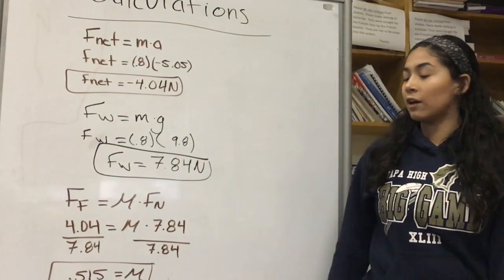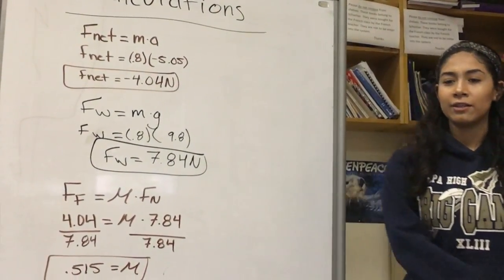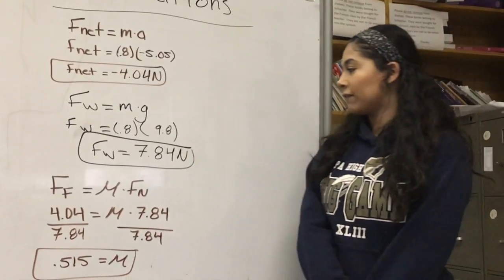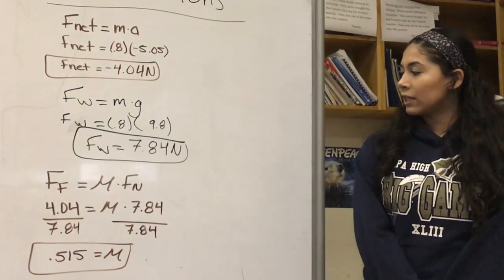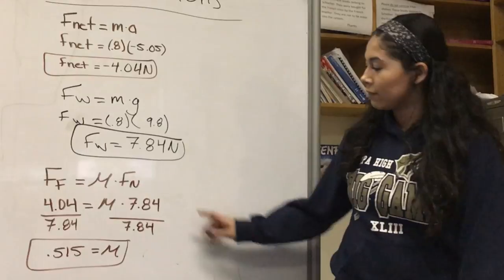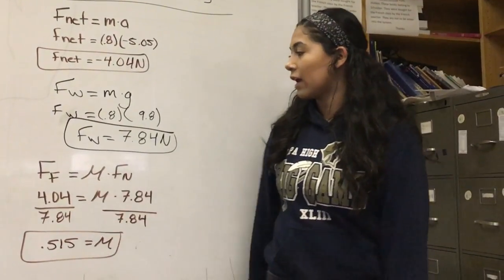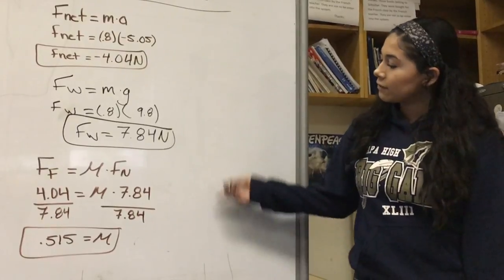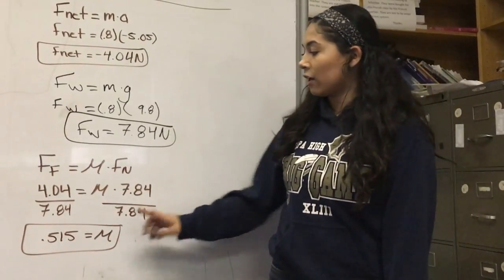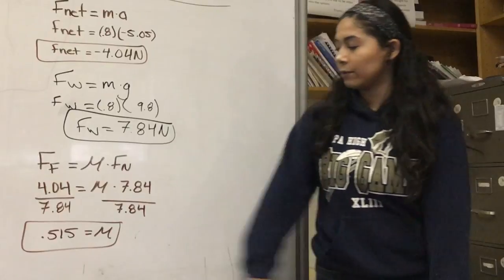And finally, solving for mu using the frictional equation which is f of f equals mu times fn. I plugged in 7.84 for fn and 4.04 for f of f. Then I divided 7.84 to both sides and got 0.515 for mu.